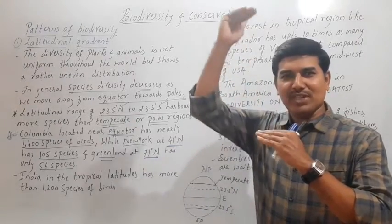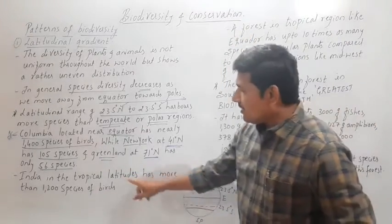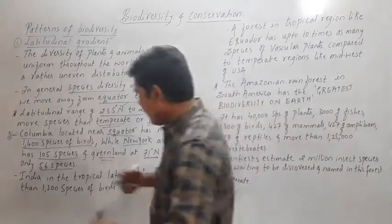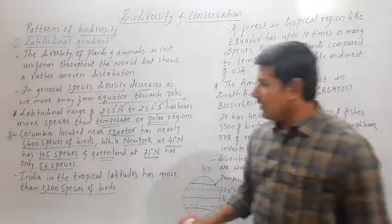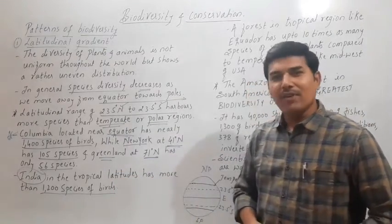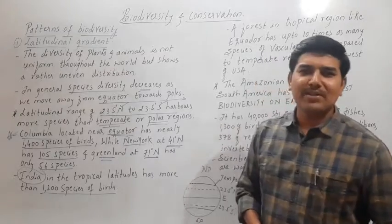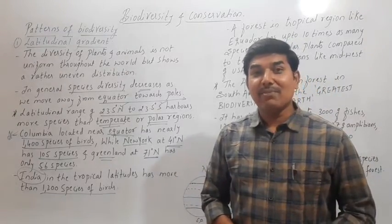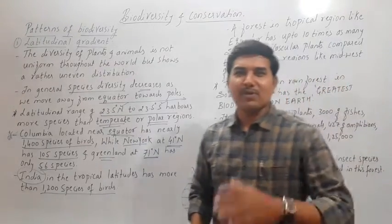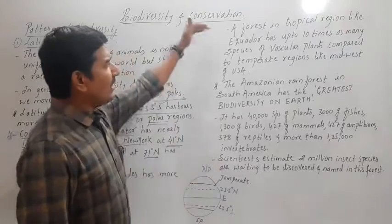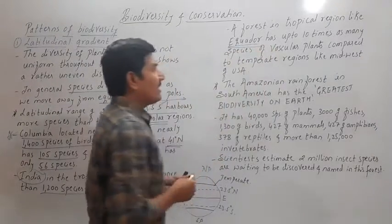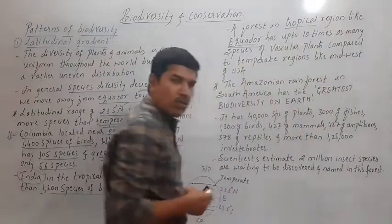These numbers are important for objective questions: Colombia has 1400 species of birds, New York has 105, and Greenland has 56. India, which falls under tropical latitudes, has more than 1200 species of birds. Our country is rich in species diversity, and the majority of Indian birds were identified by Salim Ali, who is called an ornithologist.